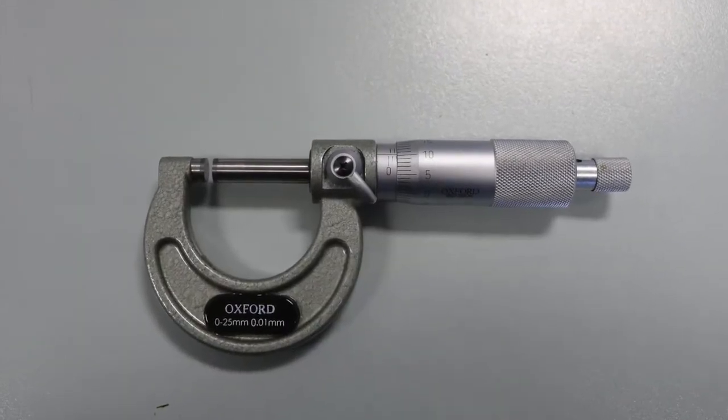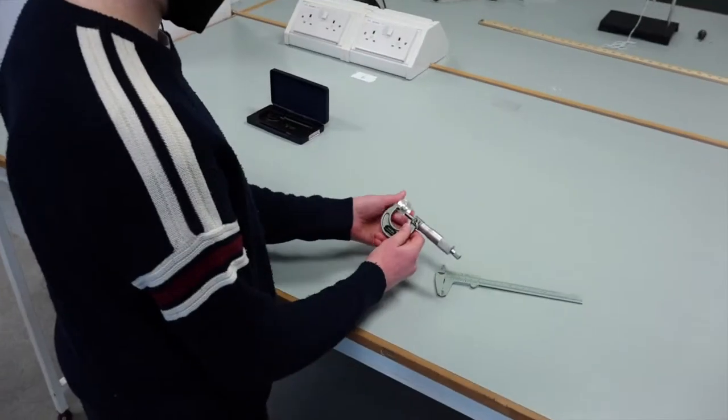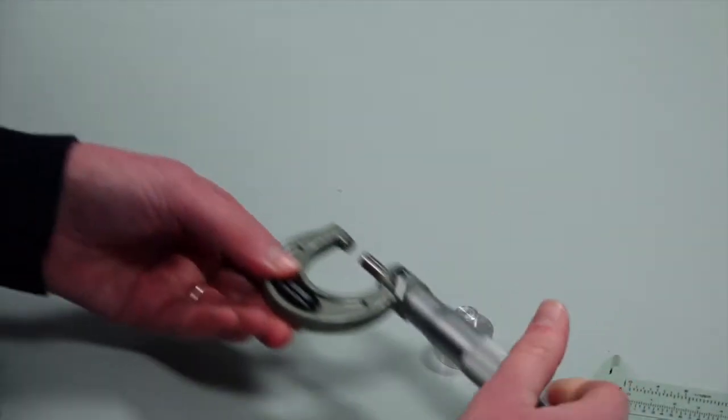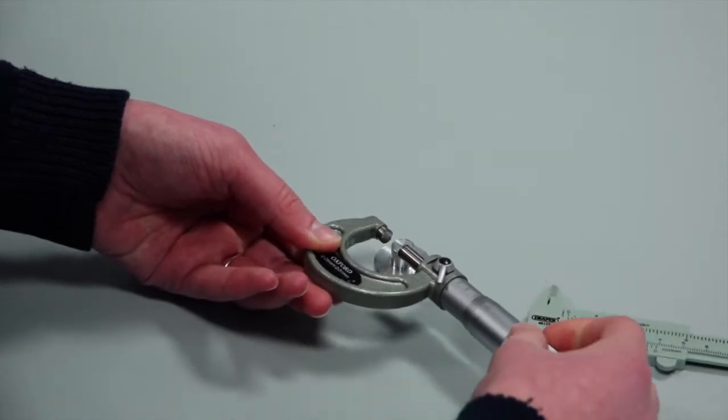This video demonstrates how to use the micrometer screw gauge. The micrometer screw gauge is more precise than the Vernier Calipers and has a smaller measurement range than the Calipers. This micrometer can measure up to 25mm.